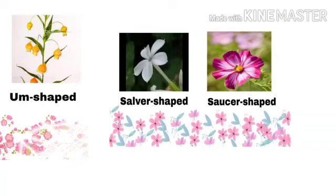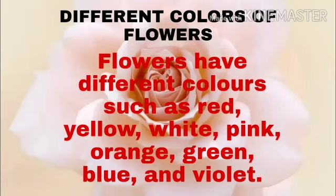Next one: saucer-shaped. We all have cup and saucer at home, so this flower's shape is just like a saucer. So these were the different shapes of flowers. Now let us talk about the colors of flowers. Flowers are of different colors — red, yellow, orange, green, blue and violet. There are many different color flowers.